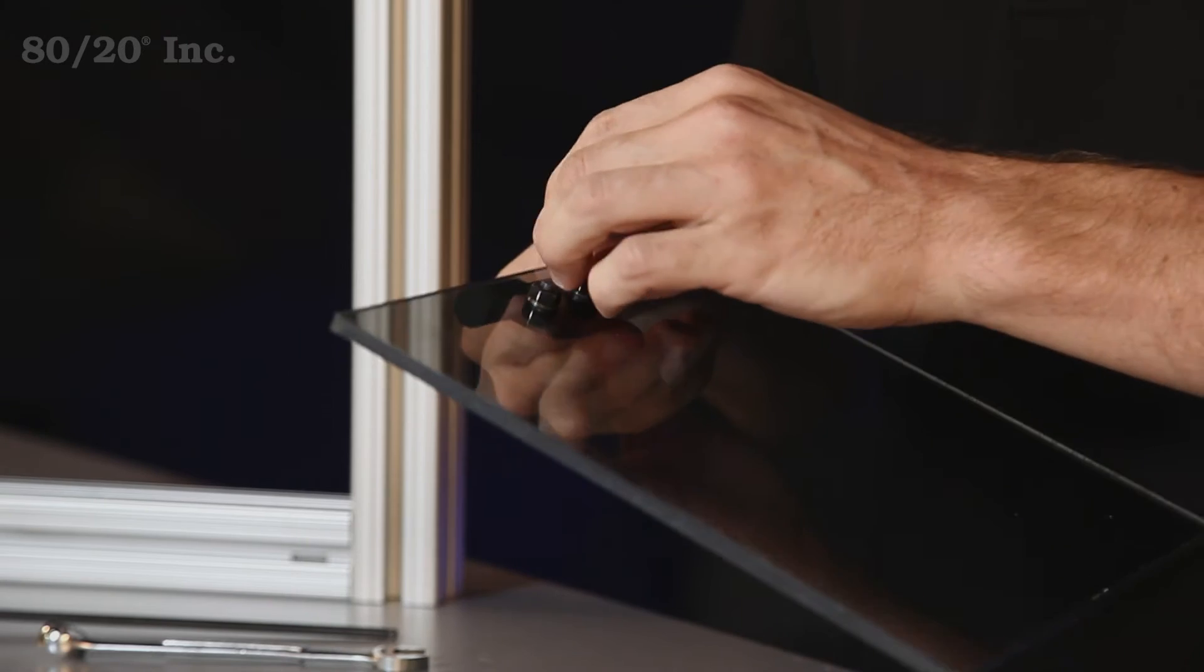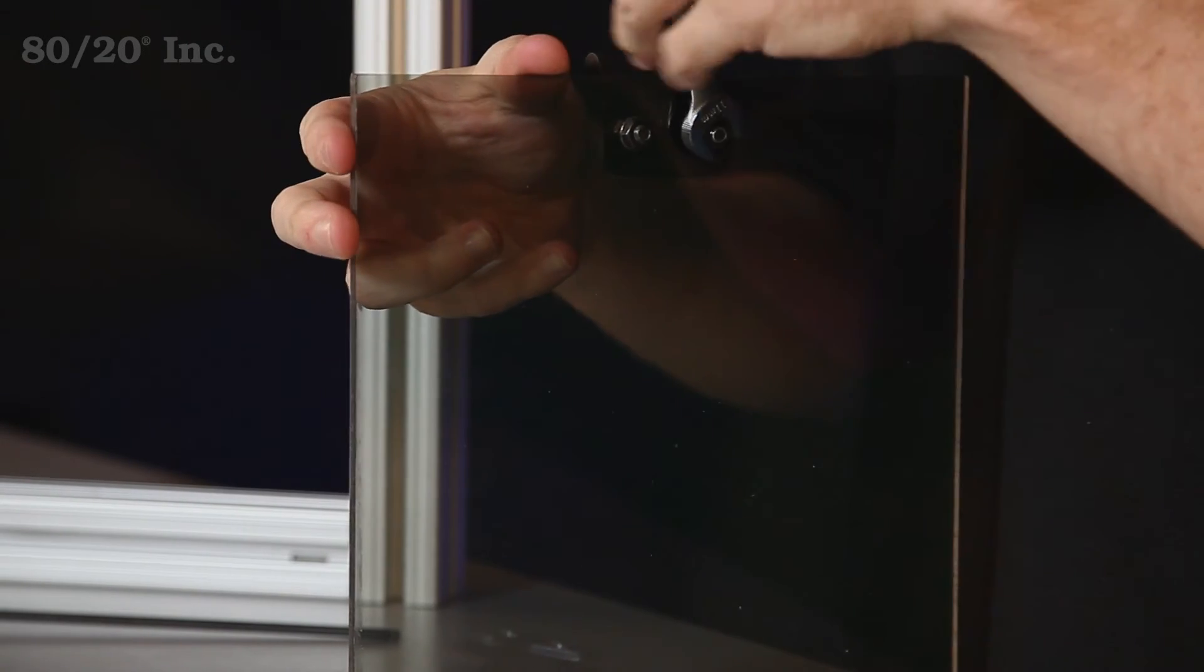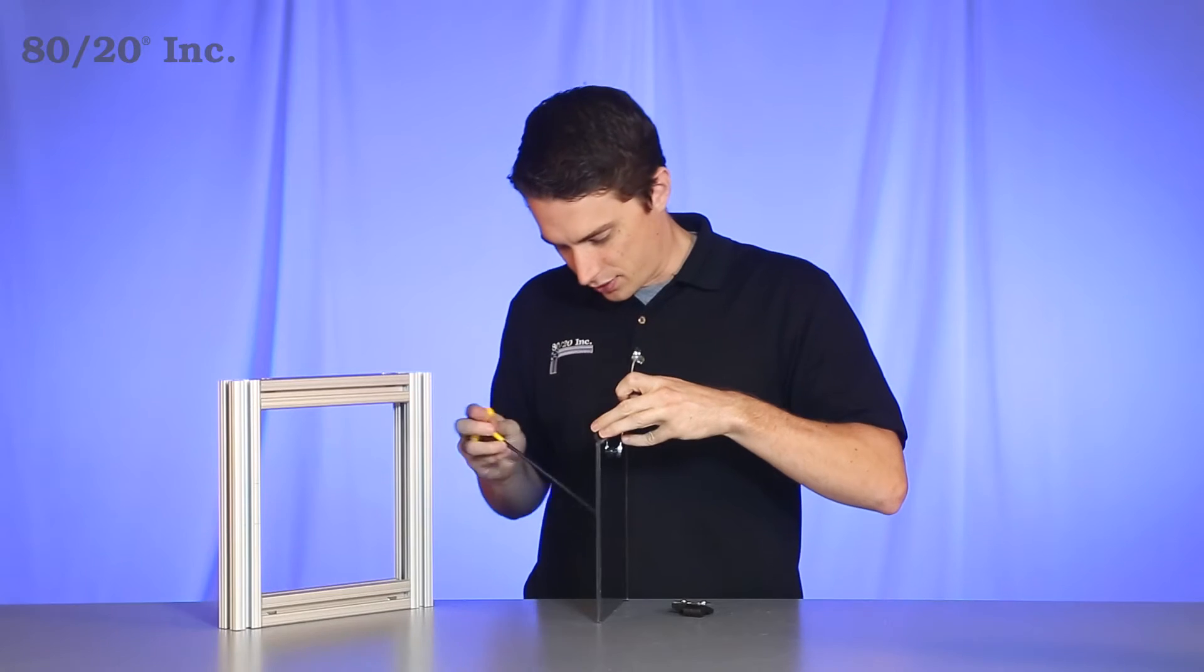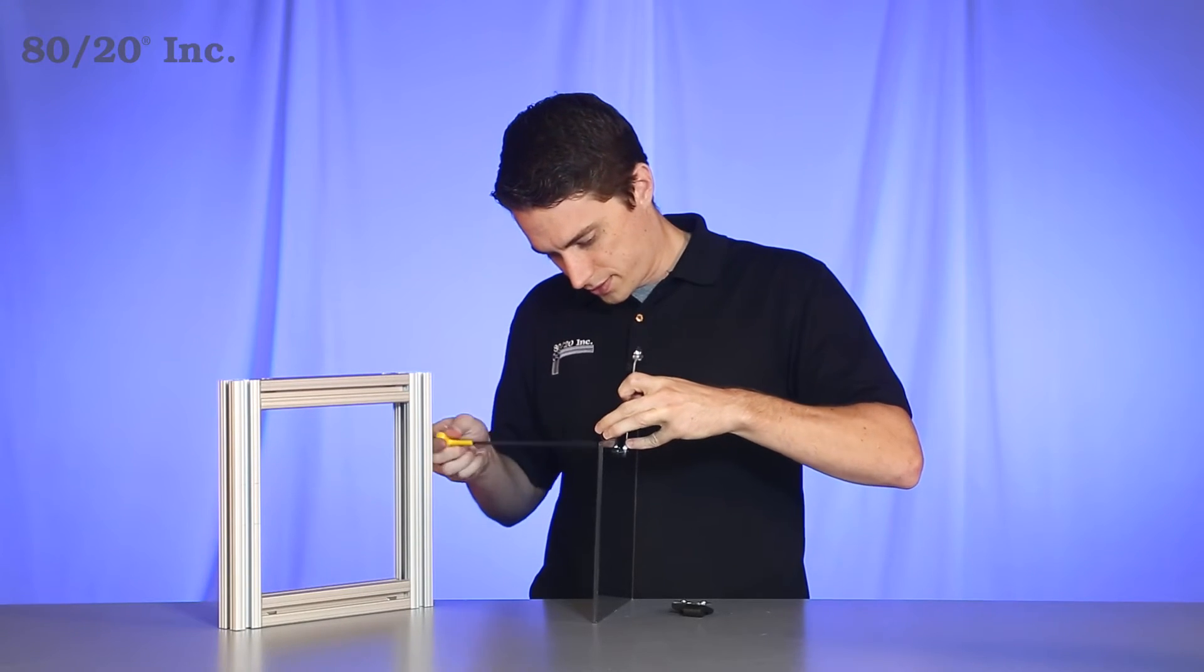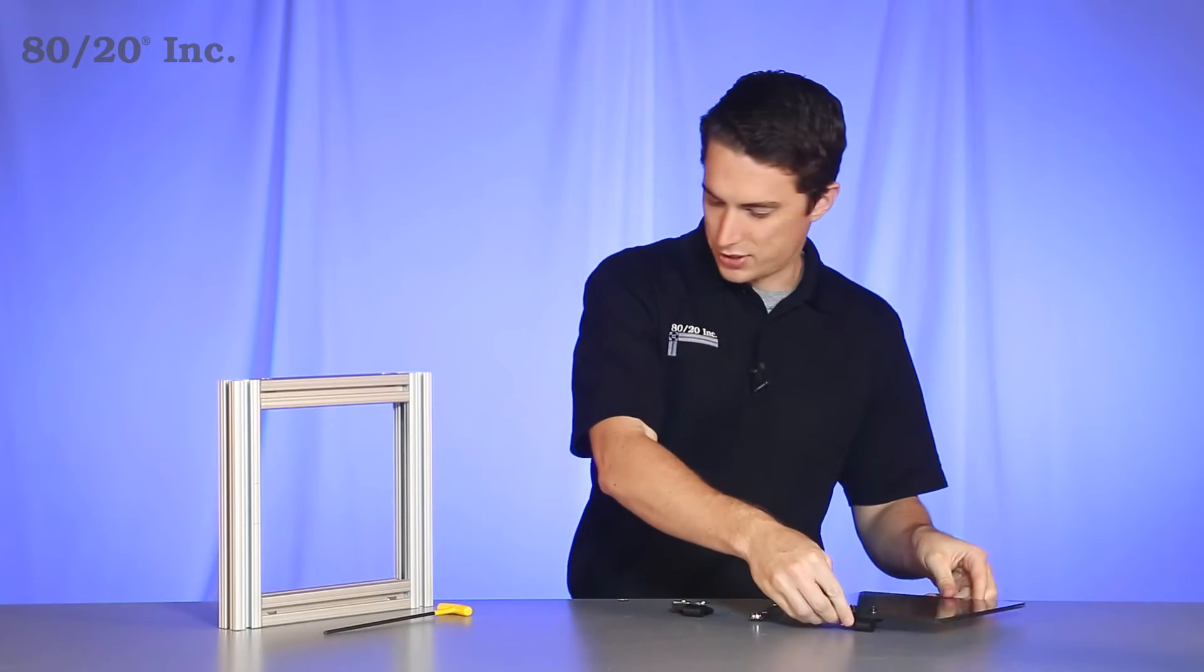Get that hand tightened on there, grab our wrenches, and we'll tighten that down the rest of the way. Once we have that tightened down, we'll set that off to the side.